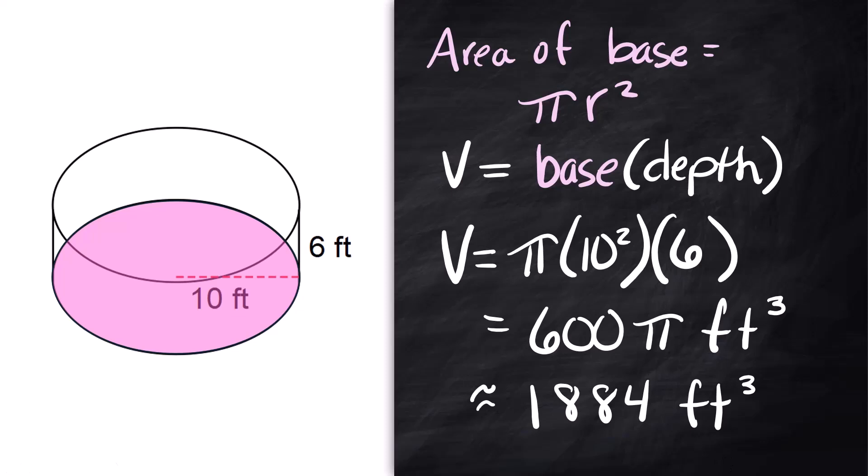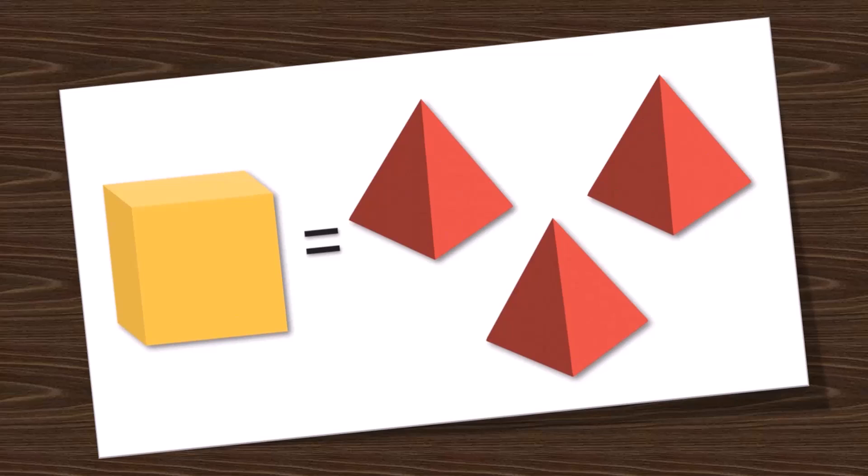That is cylinders and prisms you take the base times the depth or the height. Okay we're switching gears here a little bit because we've got other kinds of shapes that we have to talk about and those are the pointy ones. So here I have pyramids. In order to understand volumes of pyramids you have to understand how they relate to the volumes of the boxes. If the area of the base of this is the same as the area of the base of this pyramid and the height is the same three pyramids will go into a box.